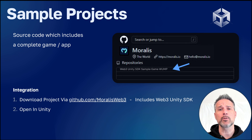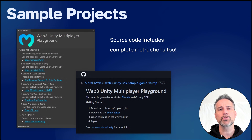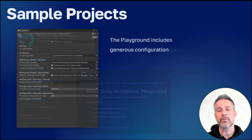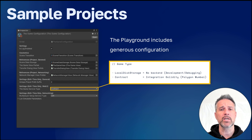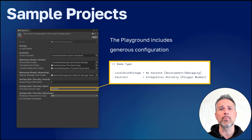This sample project is available for download on GitHub. The source code included in the project includes what you need to get started, understanding how to build the project, deploy it, and play it as well. This particular game includes generous amounts of configuration that you can do inside Unity. For example, there's a toggle to use a local disk storage mode during development — this works offline more quickly, with no need to use that Web3 wallet during the development process.